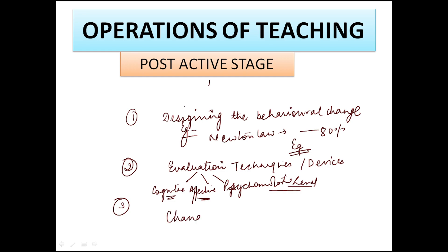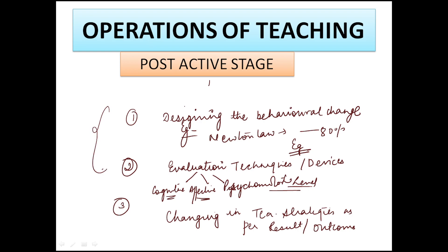After diagnosing and evaluating, and seeing the result, for the next class you have to change your teaching strategies as per the result. If the result is quite good — around 80% of students achieved the desired behavioral change that you aimed for in the pre-active stage — then your strategy is good. Otherwise, if the result is not that satisfactory, you have to change your teaching strategy as per the result or outcome.